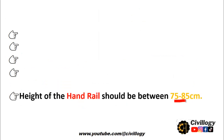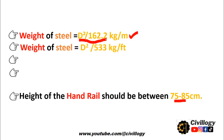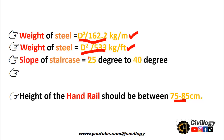The next point is about handrails. A handrail is basically the support provided alongside the staircase for easy climbing and climbing down, and its height should be 75 to 85 centimeters. Regarding the weight of steel - if you want to calculate the weight of steel, being a site engineer or site worker you should know this formula: weight of steel can be calculated as d² divided by 162.2, where d is the diameter of the bar. If you are working where the unit of feet is used, you can use the formula d² divided by 533 kg per feet.